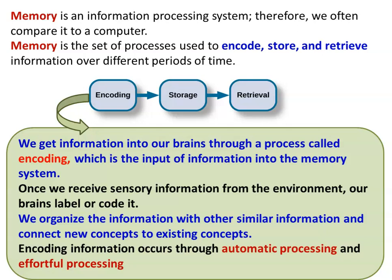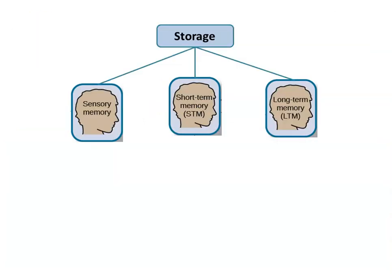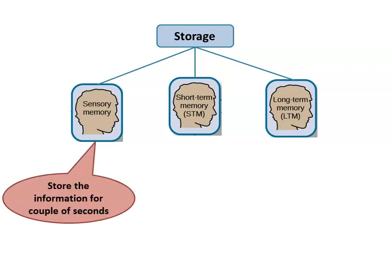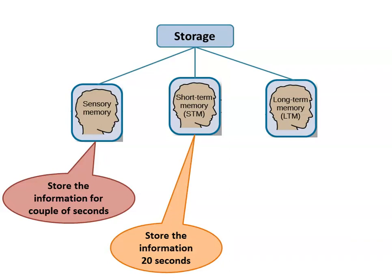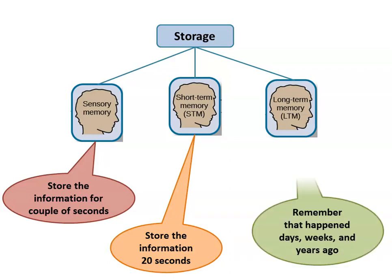Automatic processing is when the brain immediately gives an answer without much effort. Effortful processing is when the brain works with some effort to give the answer. Any encoding of information is through either automatic processing or effortful processing. The three memory stores are sensory memory, short-term memory, and long-term memory. Sensory memory stores information for a couple of seconds; short-term memory stores information for about 20 seconds; and long-term memory can retain information that happened days, weeks, and years ago.